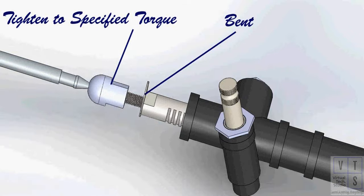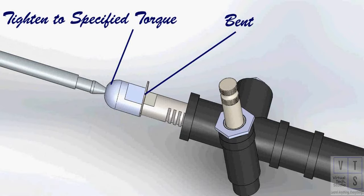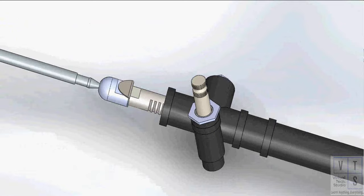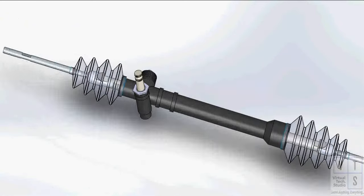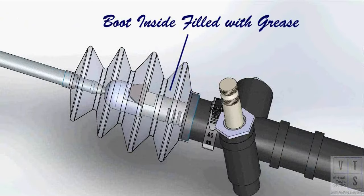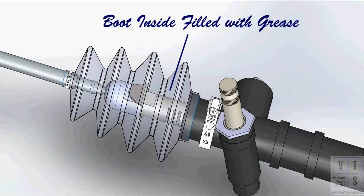Tighten tie rod to specified torque. Then bend the lock washer as shown. Partially fill the inside of the boot with grease, then position boot properly over gear case and tie rod, and make sure that clamps are tightened firmly. Ensure that boot is free from twist and bend.